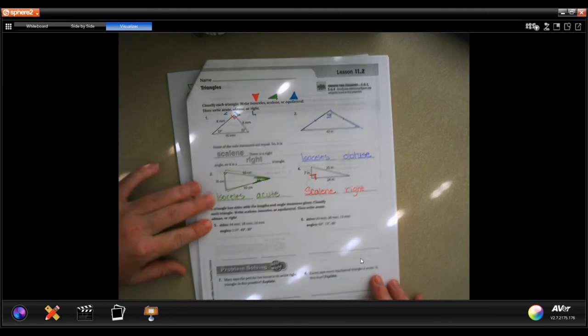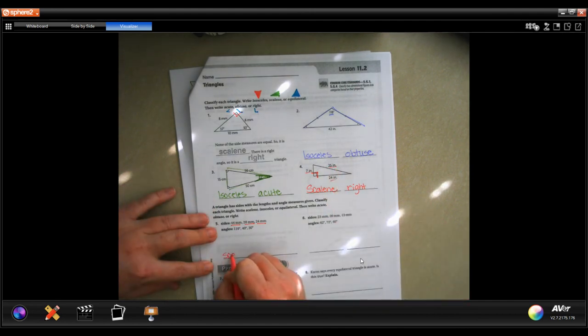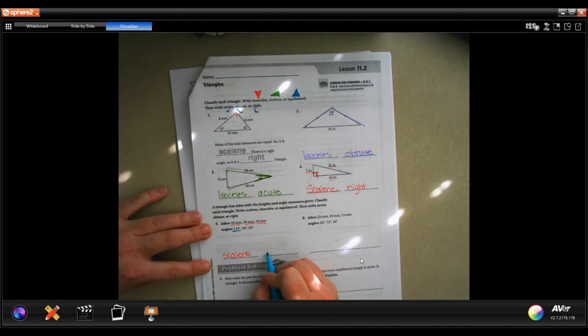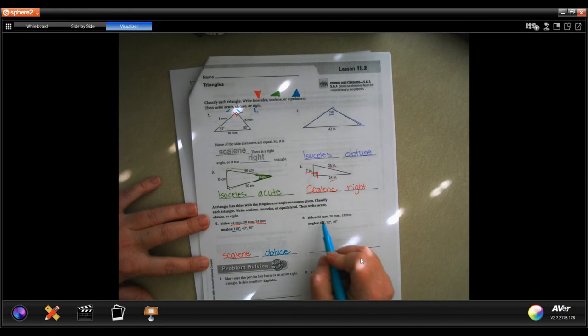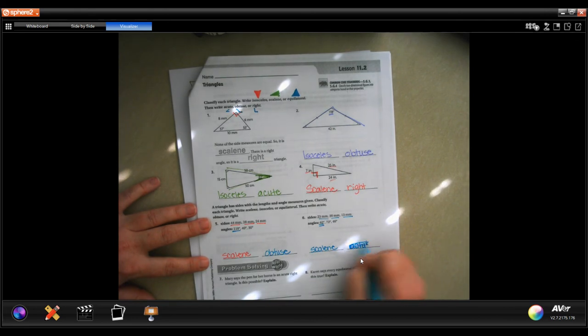You will notice that none of these sides are the same, just like none of these sides are the same, which makes it scalene. And that right there is bigger than 90, which makes it obtuse. Now again, no sides are the same, still scalene, and smaller than 90, so acute.